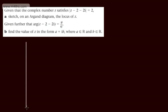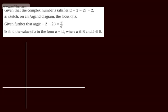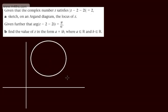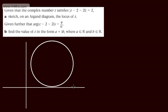So what we'll have is an Argand diagram. From the previous videos, we should recognise that this is going to be a circle, and it's going to have centre 2 plus 2i and a radius of 2. So let's draw that on there, and we'll have something that looks like so.